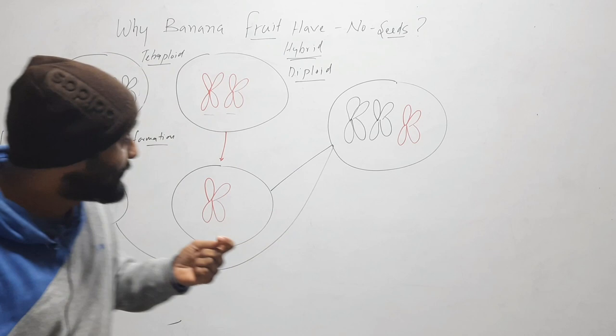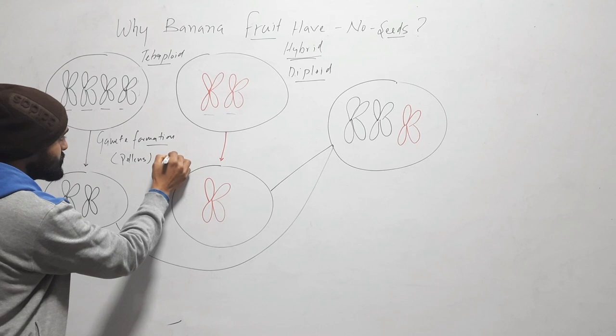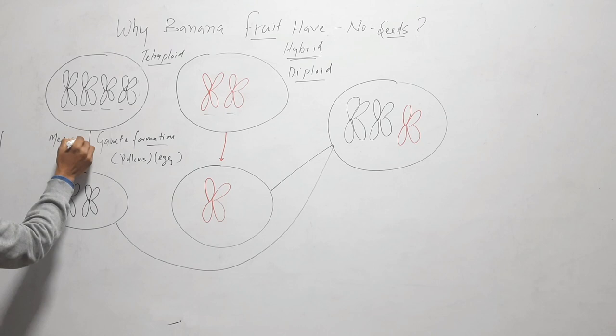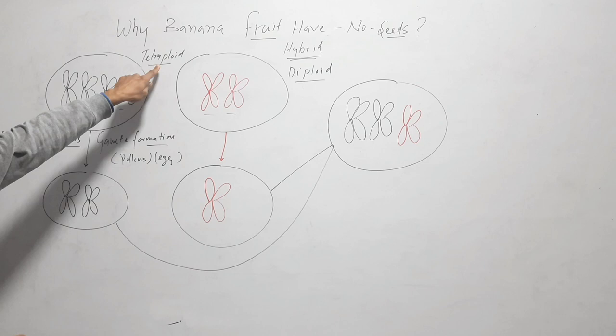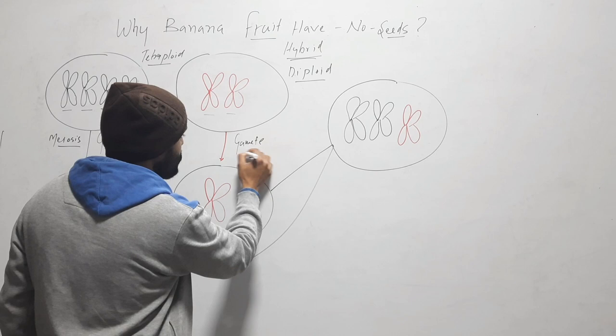gamete formation occurs during egg formation in the female part and during pollen formation in the male part. During gamete formation, meiosis occurs, and due to meiosis the chromosome number is reduced to half. So the gametes of the tetraploid species will be diploid, and the gametes of the diploid species will be haploid.